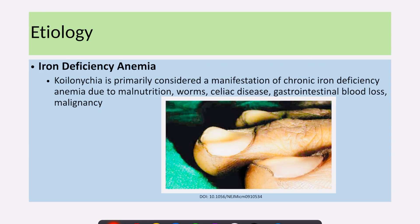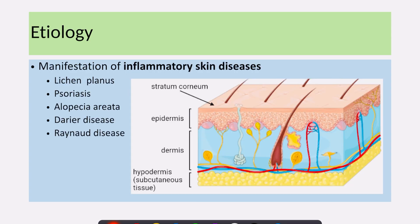Iron deficiency anemia is one of the most common causes of koilonychia. This iron deficiency can occur due to malnutrition, worm infestation, celiac disease, gastrointestinal blood loss, or malignancy. Sometimes koilonychia can be a manifestation of inflammatory skin diseases like lichen planus, psoriasis, alopecia areata, Darier's disease, and Raynaud's disease.